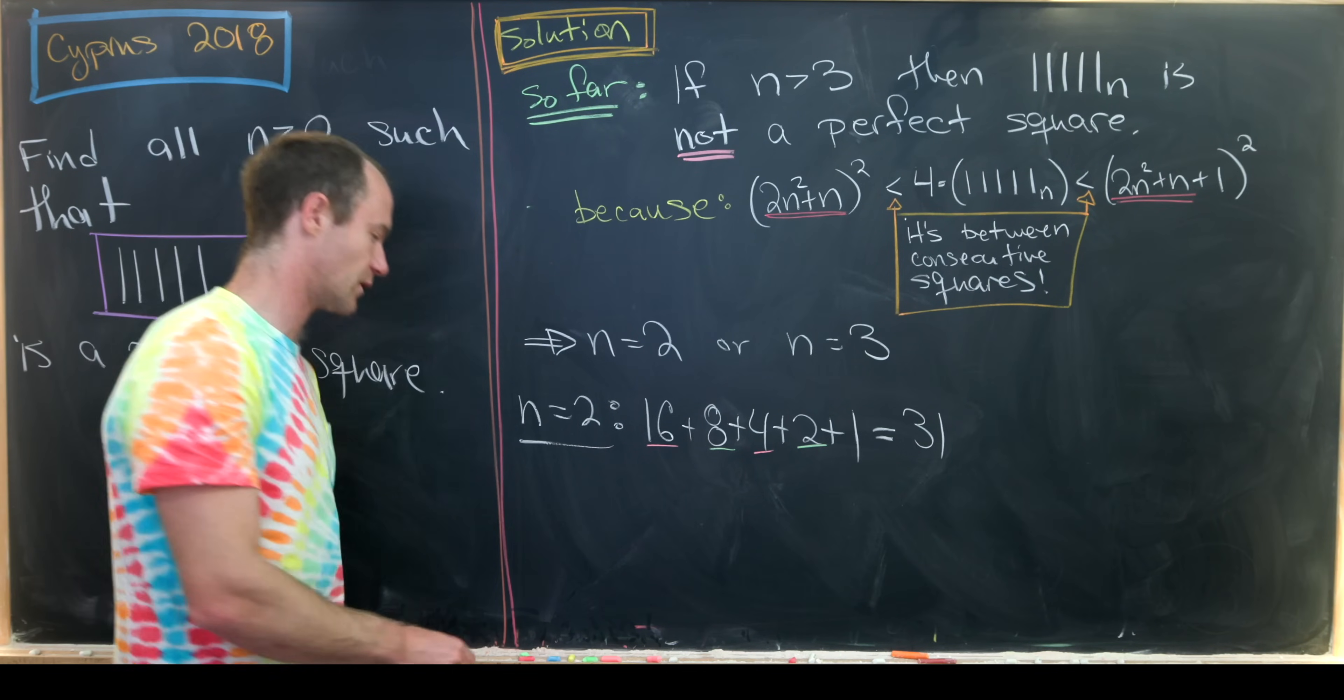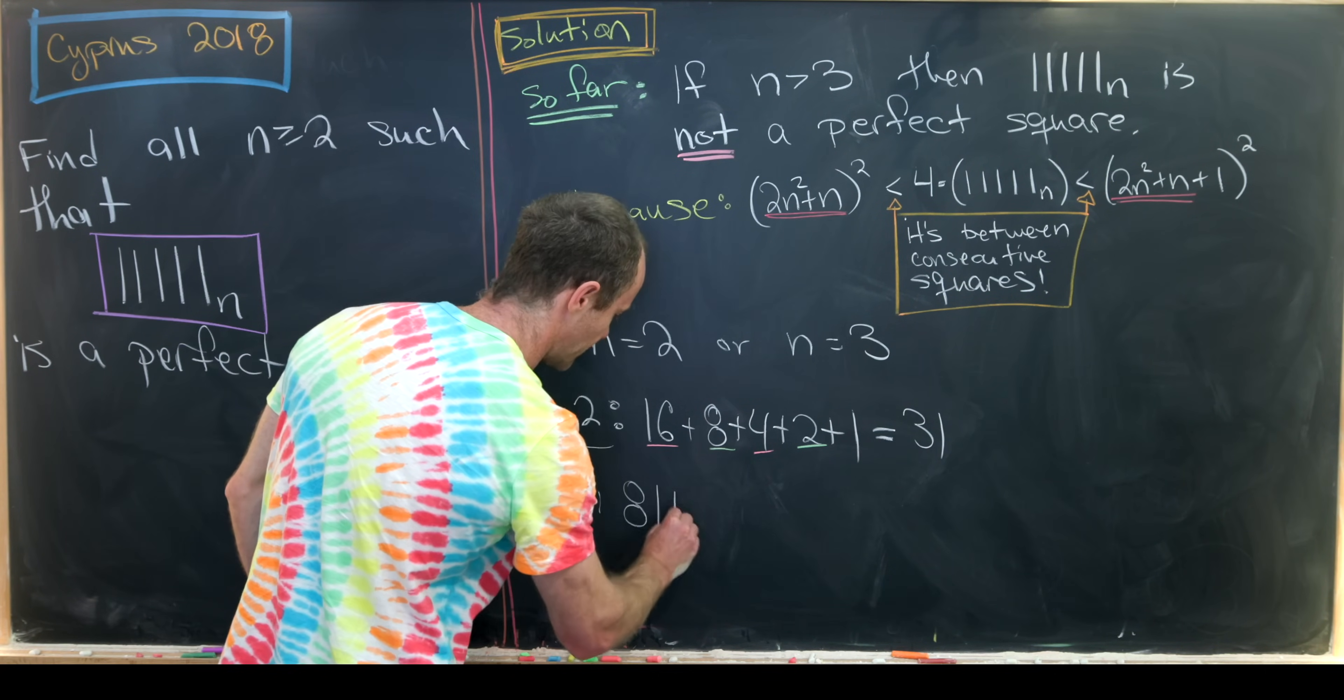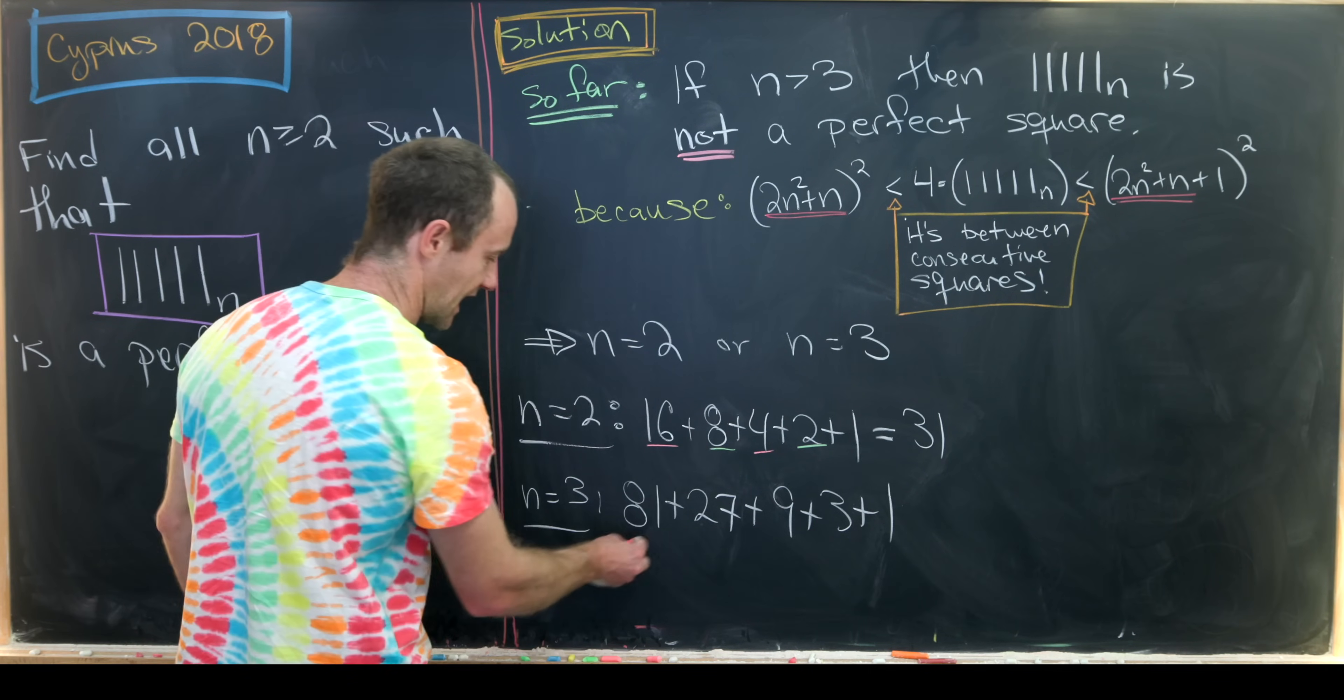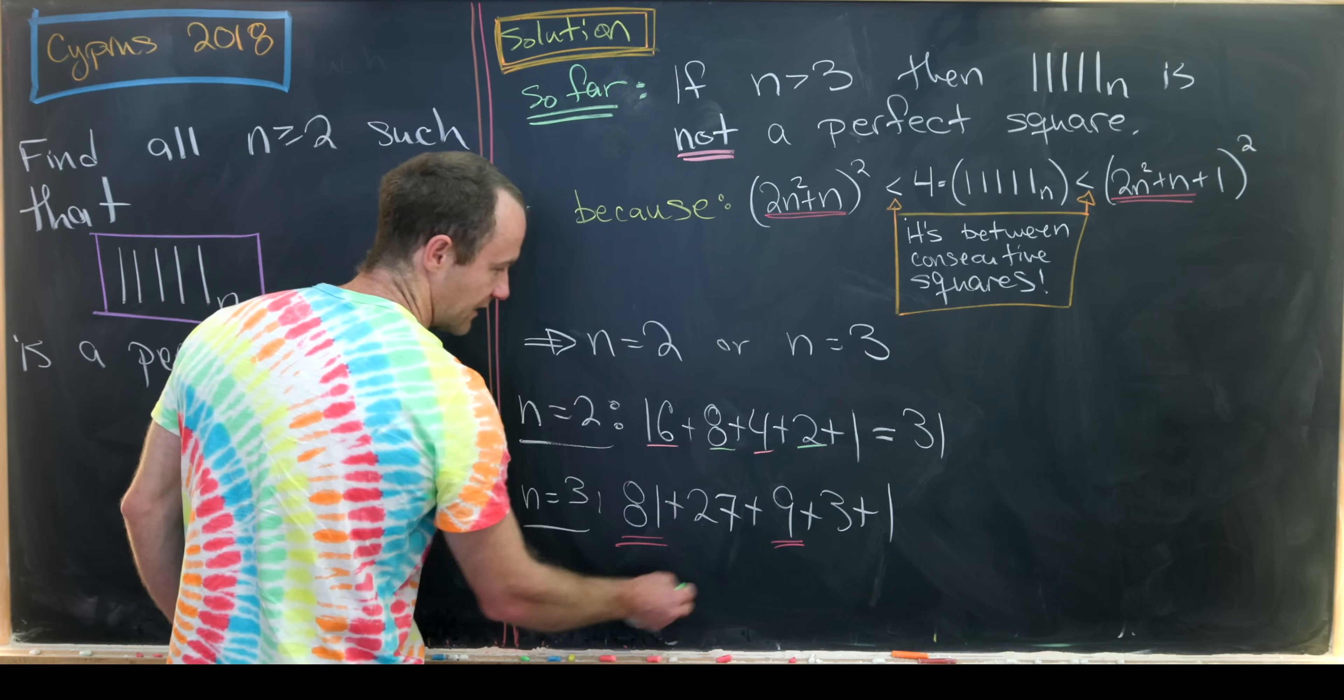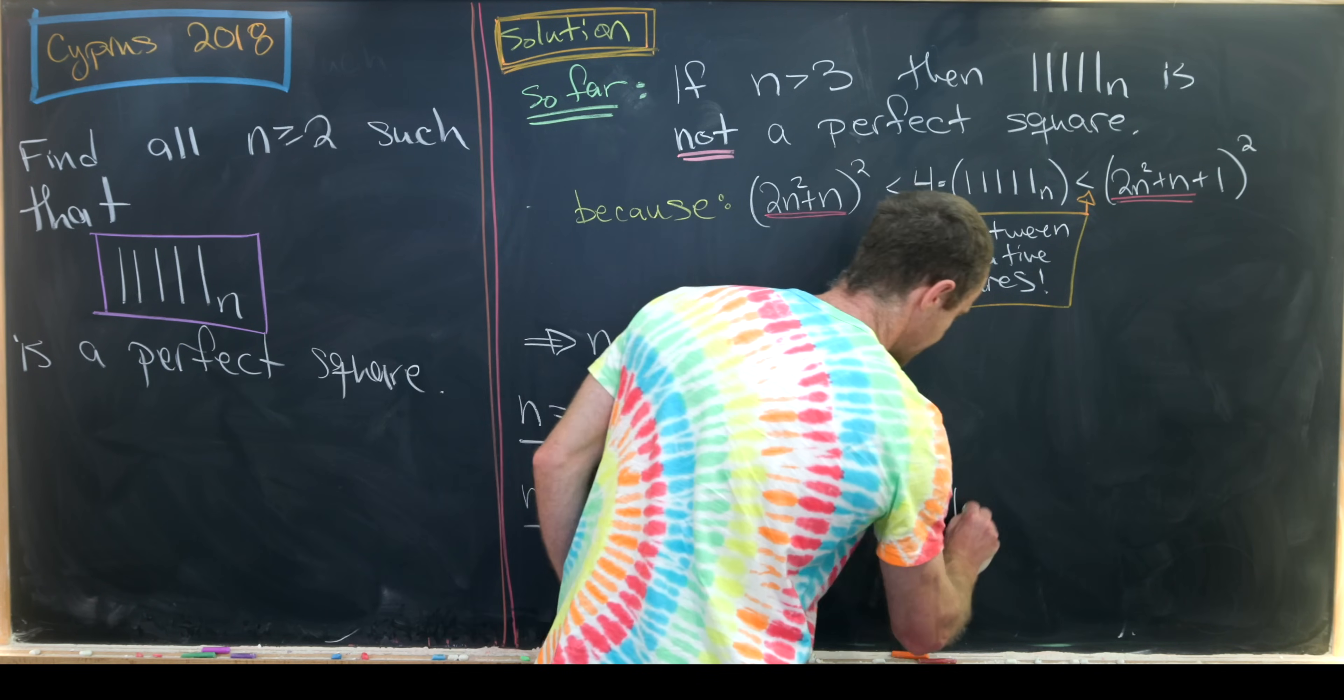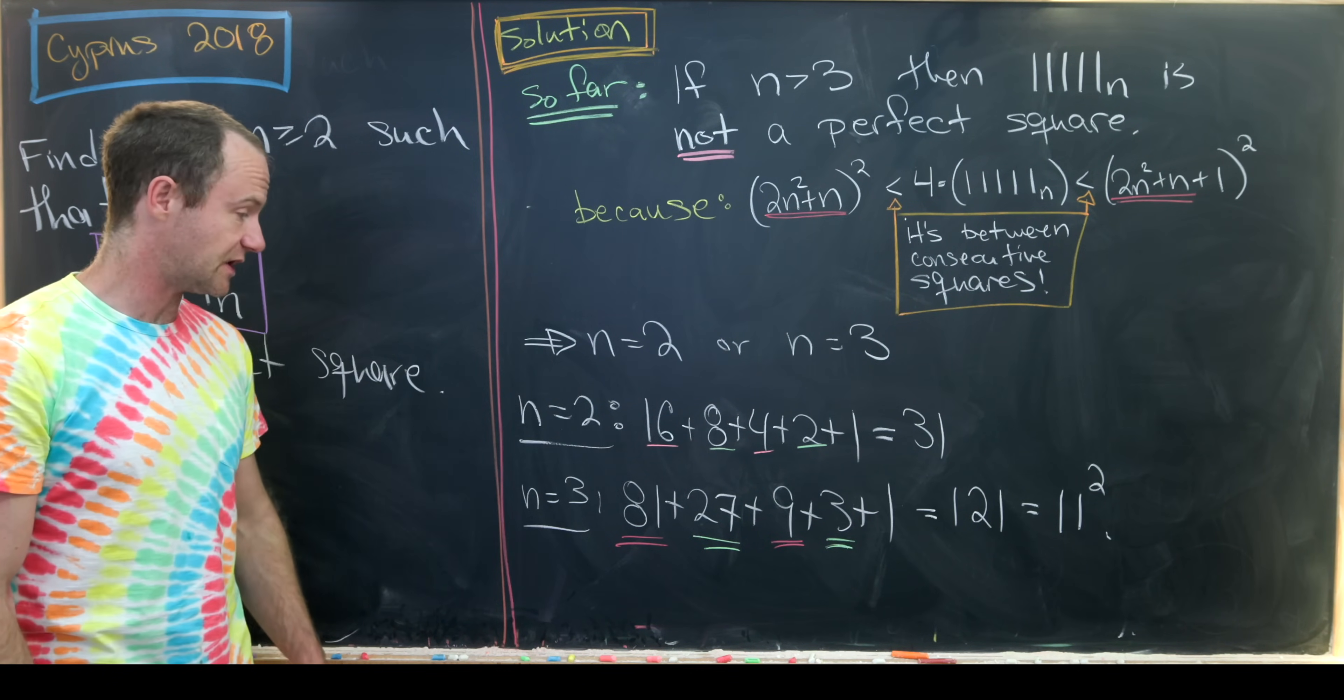So let's jump into the n equals 3 case. So that'll give us 3 to the 4th, which is 81, plus 27, that's 3 cubed, plus 9, plus 3, plus 1. Okay, so let's see, 81 plus 9 is 90, and then 27 plus 3 is 30. 90 plus 30 is 120, plus 1 is 121, but that's 11 squared. So in fact, we get a perfect square in the n equals 3 case.